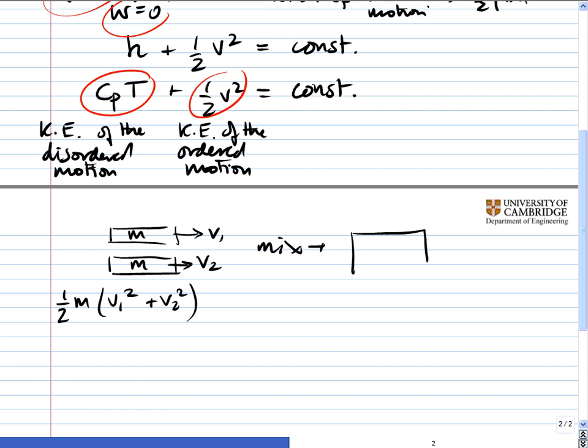And that at the end you've got one quantity of mass 2m that's got an average velocity. A velocity now of v₁ plus v₂ over 2. So the kinetic energy of ordered motion here is a half times 2m times v₁ plus v₂ squared over 2 squared, which is 4.